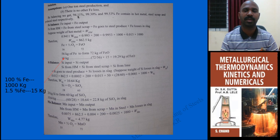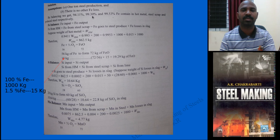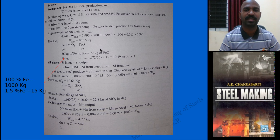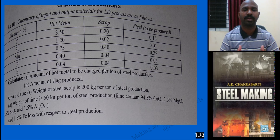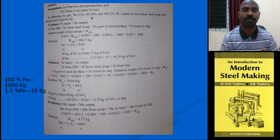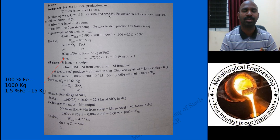By balancing from the numerical problem data, 94.11% is the iron weight percentage in hot metal, and 99.3% is the iron in steel scrap when you sum up all elements and subtract from 100%. The iron in steel produced is 99.53%.